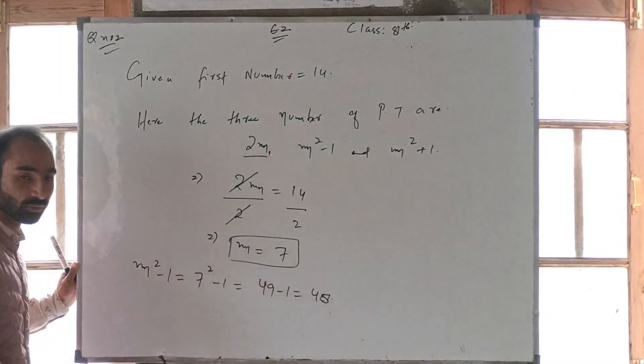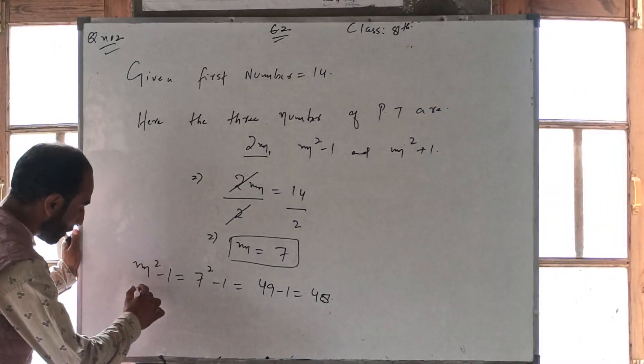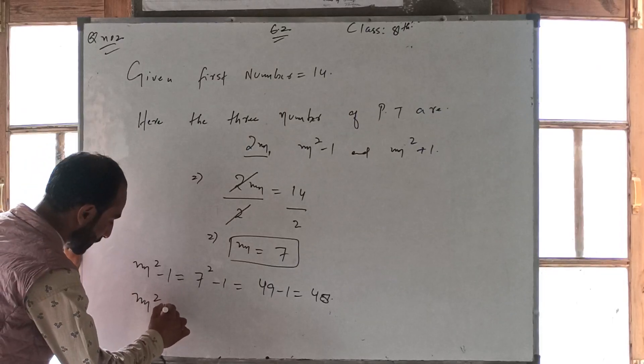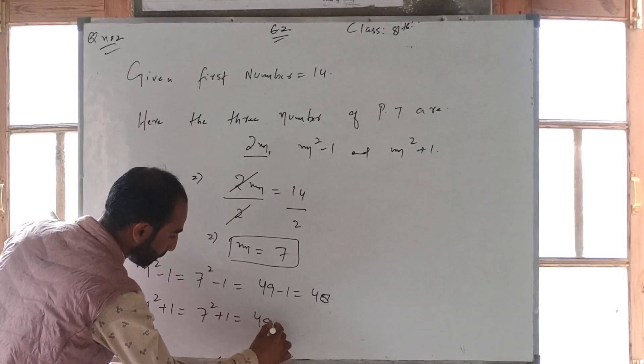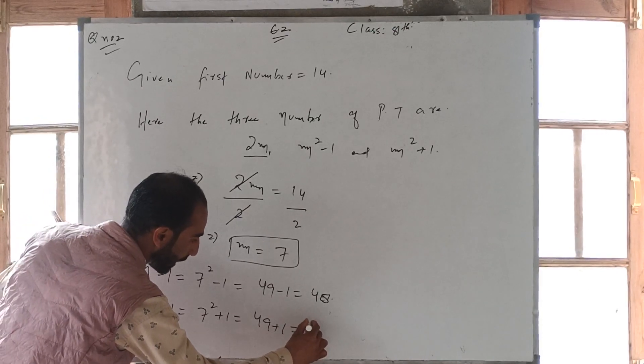That is the second value. Now third, what is m square plus 1? That is 7 square plus 1 is equal to 49 plus 1. That is 50.